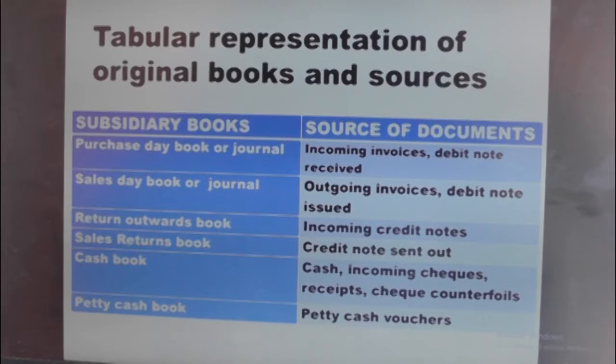Now let us see the tabular representation of original books and their source of documents. Don't forget, the topic we are still discussing is subsidiary books and source of documents. We want to see the subsidiary books now, and their source of documents. The first one is the Purchases Day Book, which can also be called Purchases Journal. The source of documents to the Purchases Day Book or Purchase Journal is incoming invoices and debit notes that have been received.